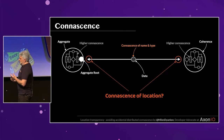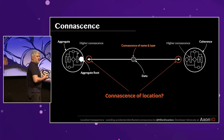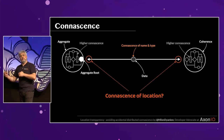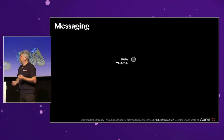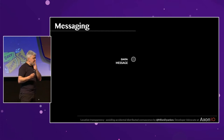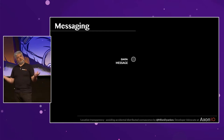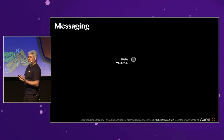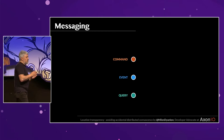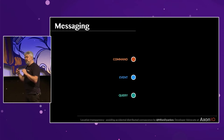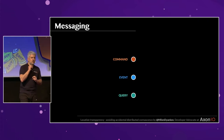If we agree there is a connessence of location, what can we do to mitigate that — in other words, how can we introduce location transparency so that our components do not need to be aware of where other components are? Let's focus on that piece of data in the middle. We typically call it messages: a system sends a message to another system. But it's still too broad and too generic, because there are different types of messages which need to be handled in different ways.